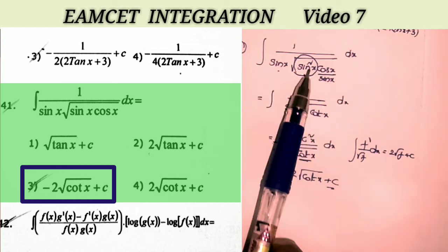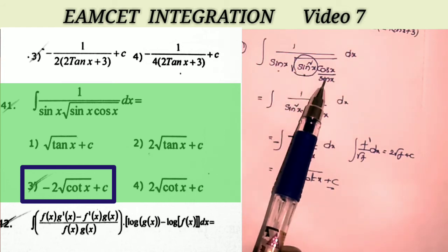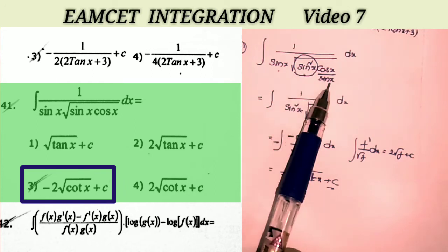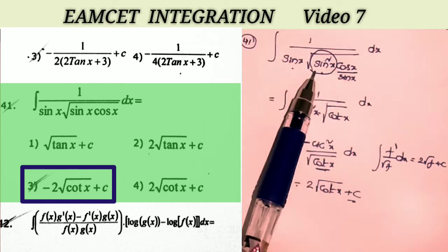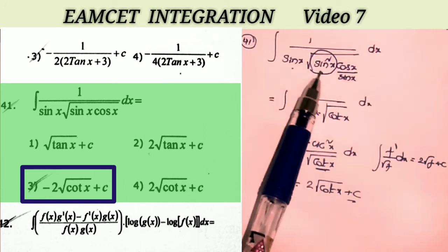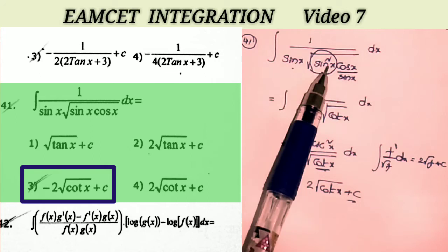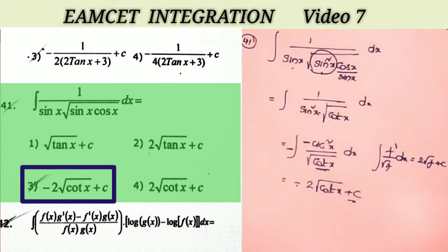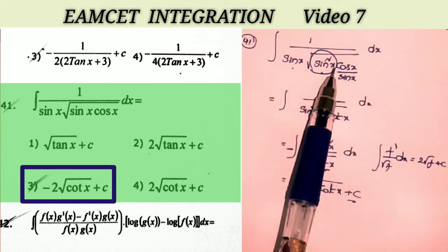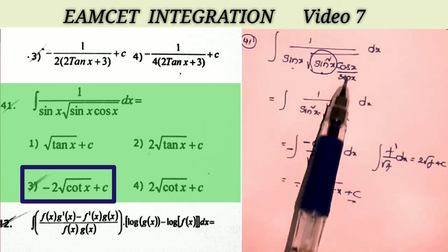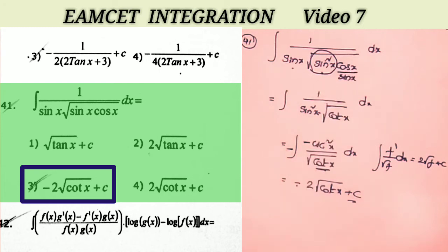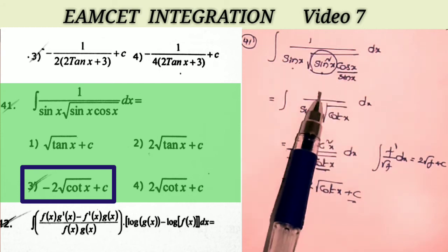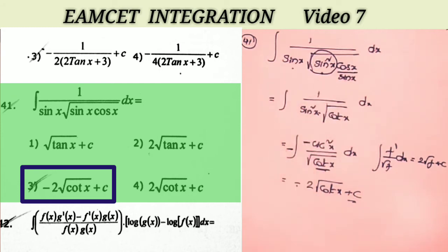To summarize: we multiplied by sin x · sin x in the square root value, took √(sin² x) = sin x, so sin x · sin x = sin² x. The remaining value under the root is cos x / sin x = cot x, and 1/sin² x = cosec² x. Applying the formula gives the answer.